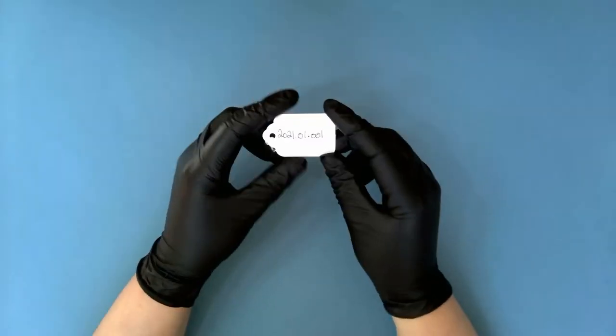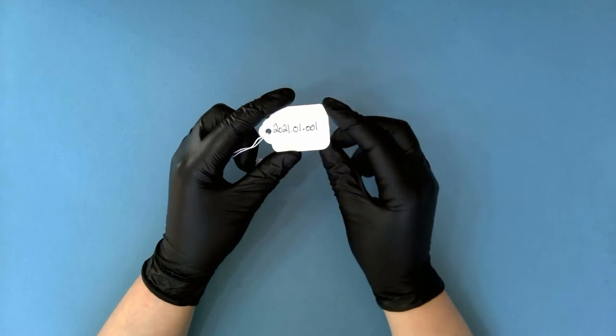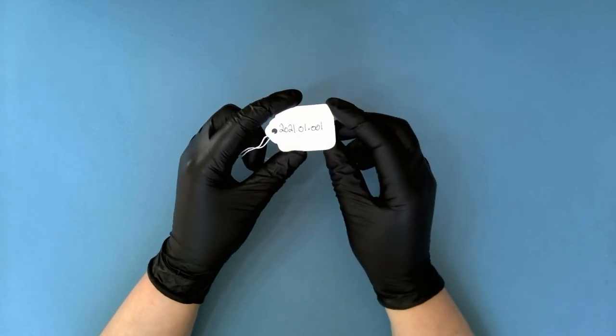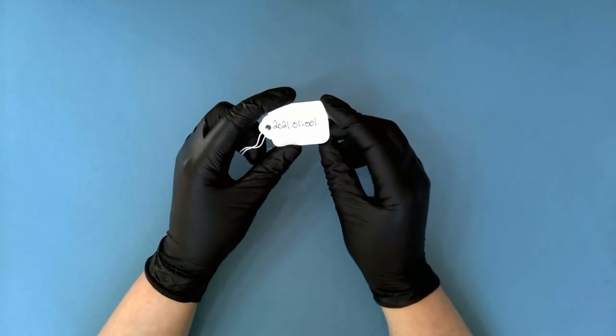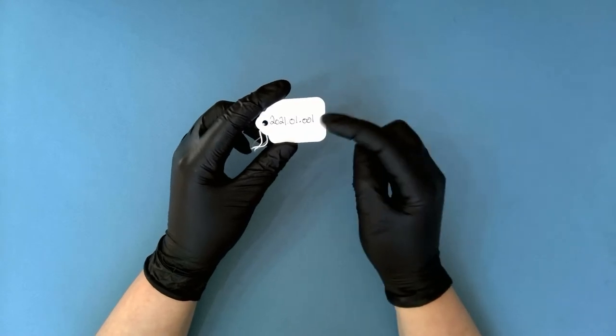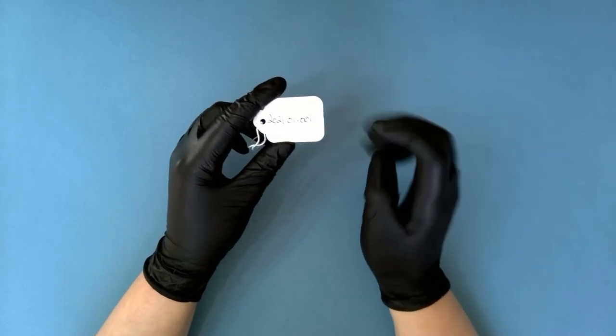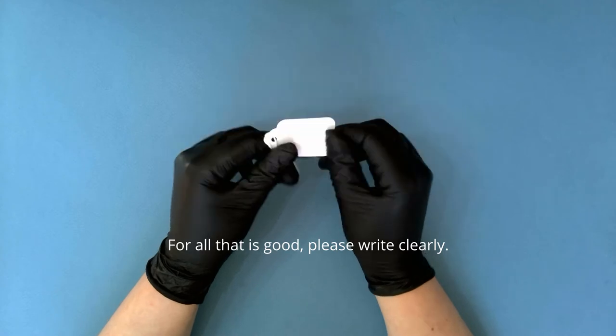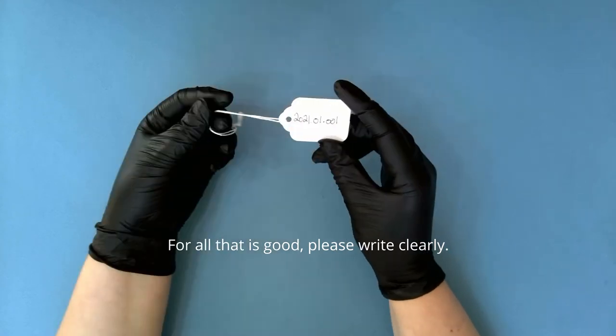Before we dive real deep into this topic, I just have to put it out there. We want to write clearly and concisely on our label. Put the object accession number or ID on there because we can't find the object's information if we can't read it folks. Make sense?